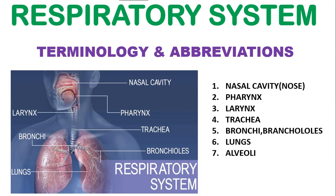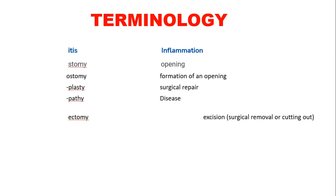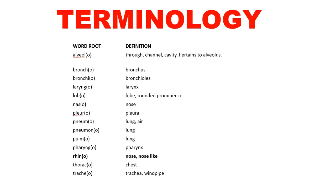Hi everyone. In this video we are going to discuss about medical terminology and abbreviations of the respiratory system. I have already uploaded a video on diseases of the respiratory system, so go through it. These are the few word roots we will see: 'itis' means inflammation, 'ostomy' means formation of an opening, 'plasty' means surgical repair, 'ectomy' means removal or cutting out.